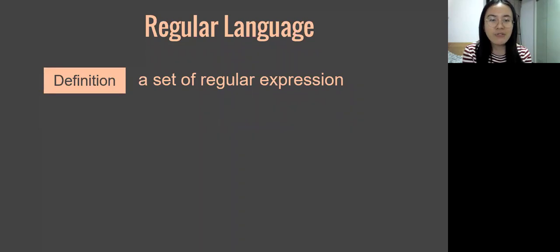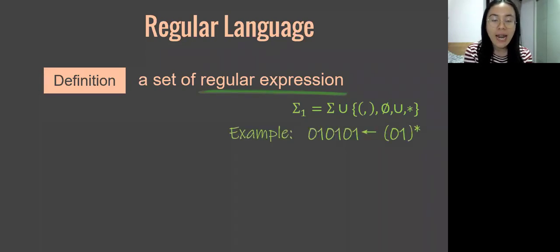The regular language refers to a language that can be specified as a regular expression. The components of a regular expression are quite simple: only the original alphabets, plus brackets, Kleene star, empty string, and union symbol.